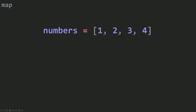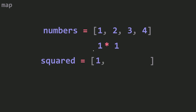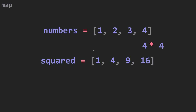Let's see an example for why you will need to use the map method. I have here an array of numbers 1, 2, 3, 4, and I want to get the squared number of each of these numbers. I also want to save them in another array instead of the original array, and I want the position of the squared numbers to be the same as the original numbers. So for example, 1 times 1 equals 1, 2 times 2 equals 4, 3 times 3 equals 9, and 4 times 4 equals 16.